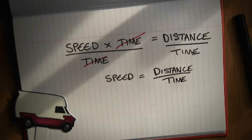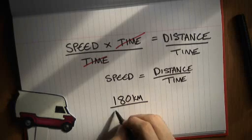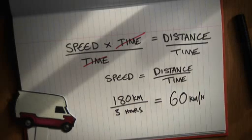So if it took me three hours to cover 180km, how fast would I be going? You'd be travelling at 180 divided by 3, that's 60km per hour.